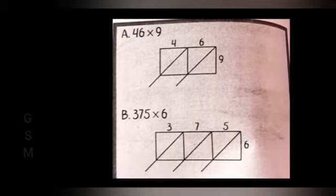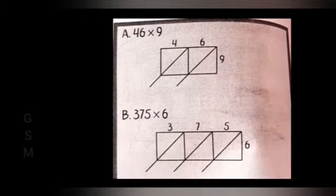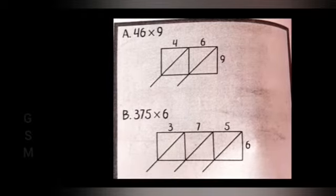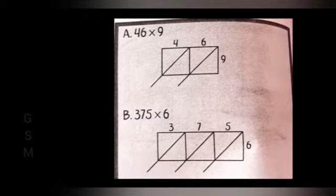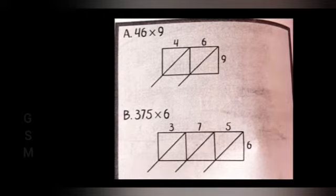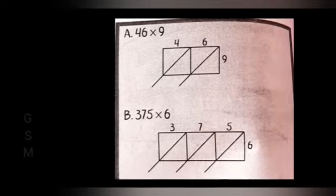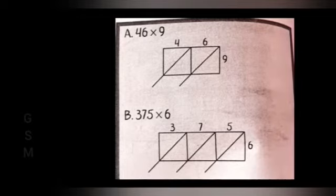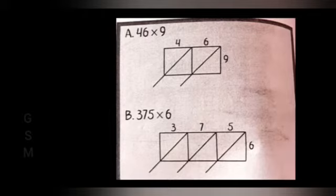We first drew the grid and then multiplied 6 by 9 to get 54. We wrote 5 in the upper part of the diagonal and 4 in the lower part. We then multiplied 4 by 9 to get 36 and wrote 3 in the upper part and 6 in the lower part of the diagonal.